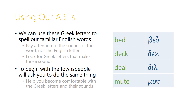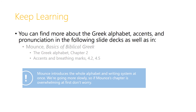This is the kind of exercise that the townspeople will ask you to do at the beginning as you're working through Paideia exercises, to help you become comfortable with the Greek letters and their sounds. After you've been doing this for a little while, you'll find that these letters don't look strange to you anymore, and you just automatically recognize the sounds that they make. You can find more about the Greek alphabet, the accents, the breathing marks, and pronunciation in some of the following videos, as well as in Mounce's Basics of Biblical Greek. Just be aware that Mounce introduces the whole alphabet and writing system at once — we're moving more slowly, more gently — so if Mounce's chapter is overwhelming at first, don't worry. We'll see you in the next video.